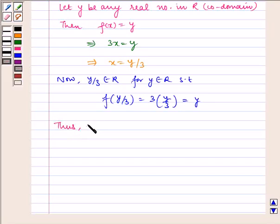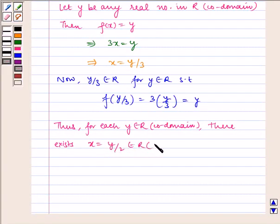Thus, for each y belongs to R of co-domain, there exists x in R such that f(x) = y. Thus, f is onto.